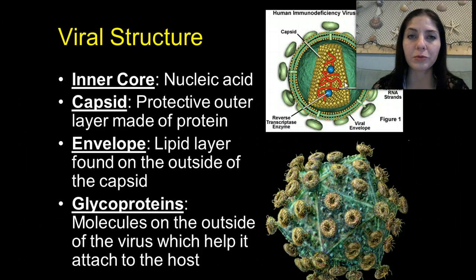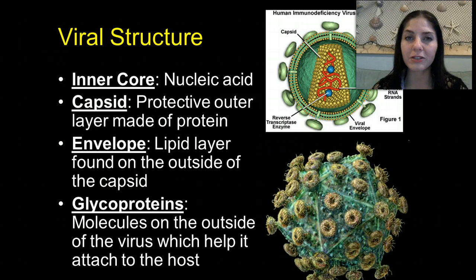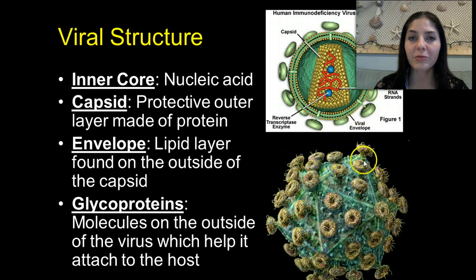We have an envelope, which is made out of a lipid layer found on the outside of the capsid. Lipids are fats. We also have glycoproteins that help to construct the virus. These are molecules on the outside of the virus which help it to attach to the host cell. These right here are glycoproteins — all these little furry mushroom-looking things, those are glycoproteins.